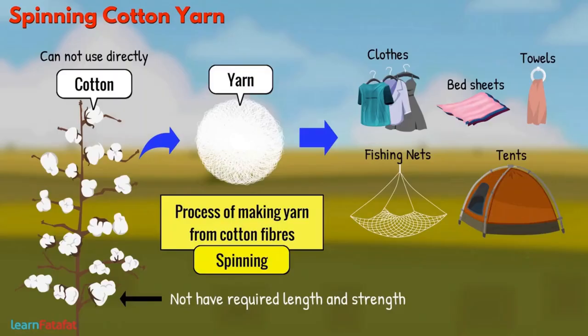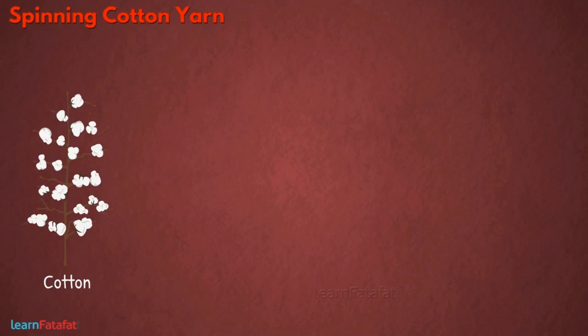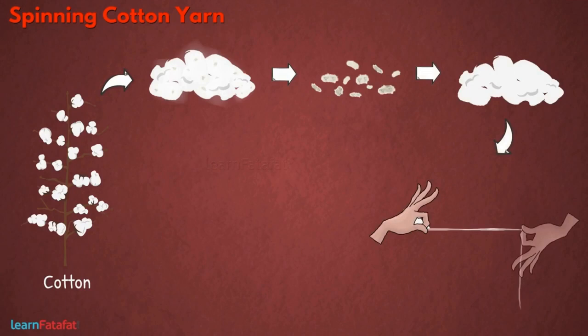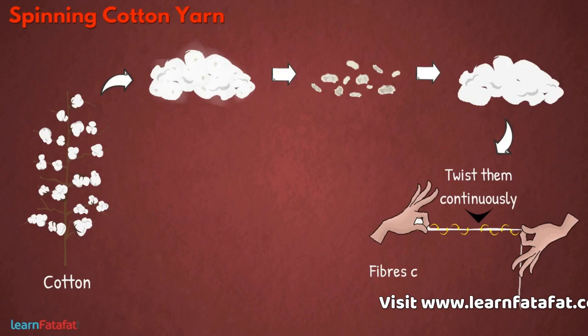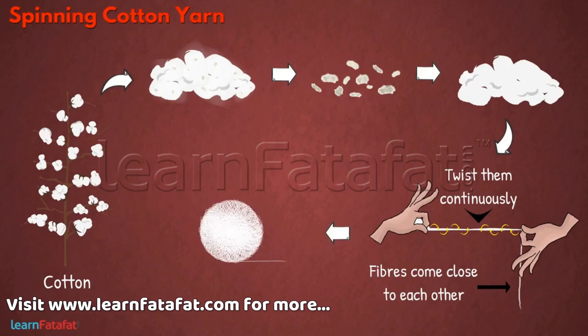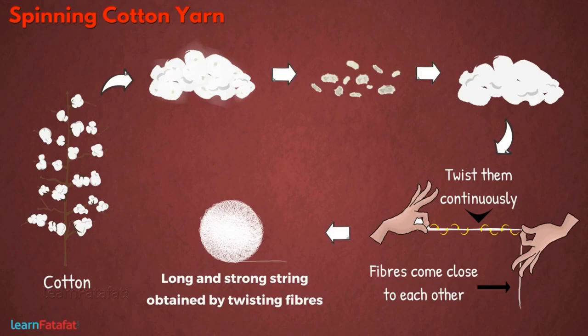You can do spinning at home as well. Take some cotton and remove seeds from it. With one hand, pull some fibers from the cotton and twist them continuously. By doing so, fibers come close to each other, hold each other tightly, and we get a long string. The long and strong string obtained by twisting fibers together is cotton yarn.